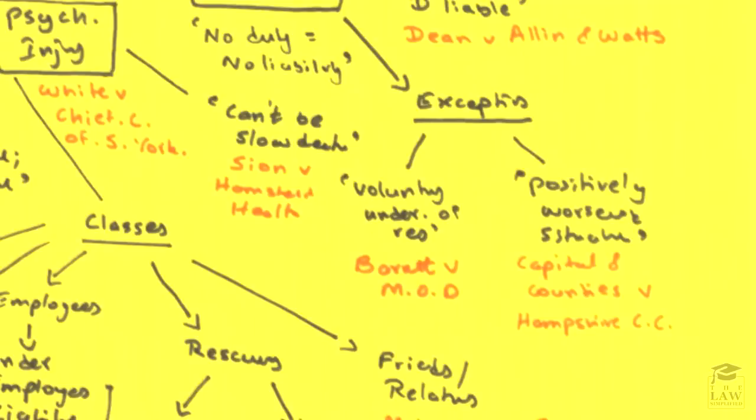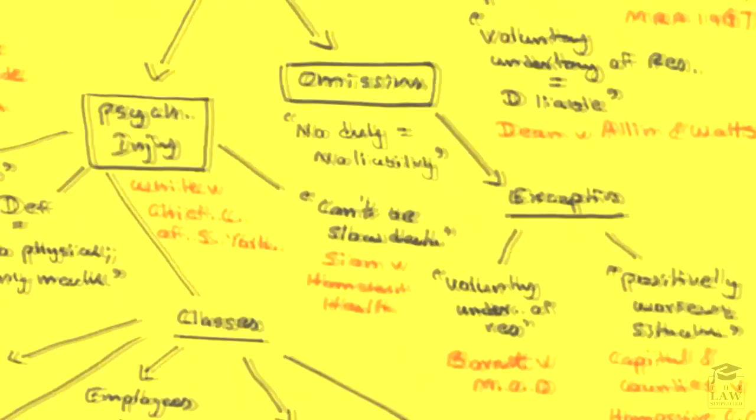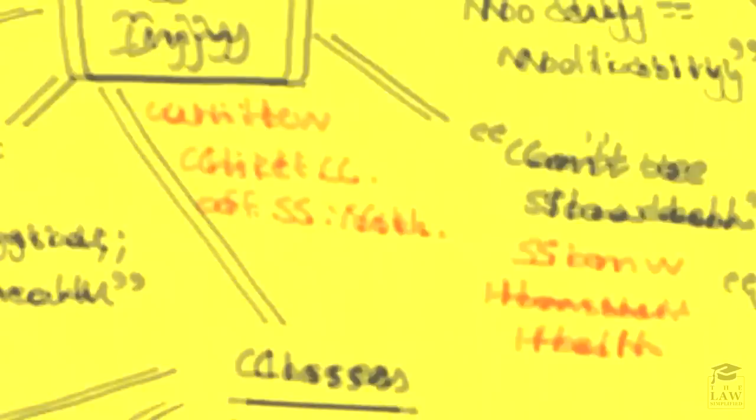Besides the classes themselves, we have to consider what situations can be considered as invoking psychiatric injury. For instance, in North Glamorgan v Walters, it can be caused by series of events, as stated by the court. It need not be one particular instance; it can be several instances consecutively that lead to psychiatric injury. But for instance, in Sion v Hamstead Health, court held that it cannot be a slow death.